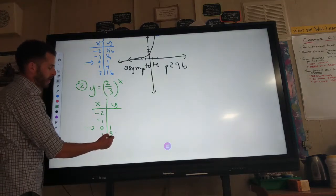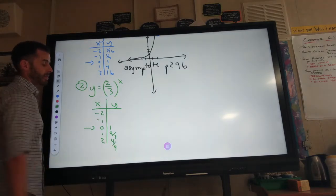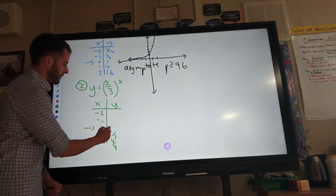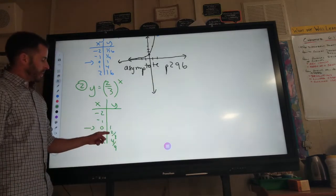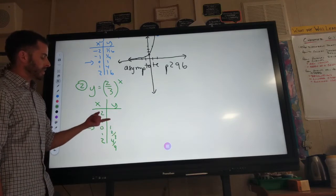2 thirds to the first power is 2 thirds. 2 thirds squared, square the top, square the bottom, gives us 4 ninths. Now, when you go on this side of your 0, 0 comma 1, it's just the reciprocal.